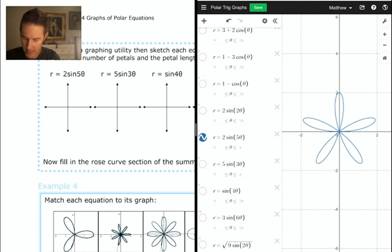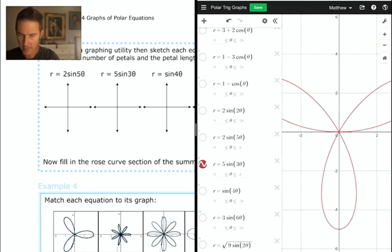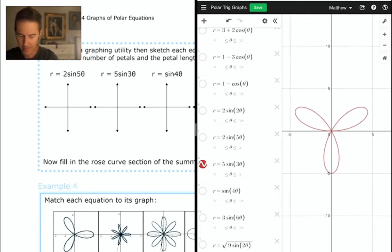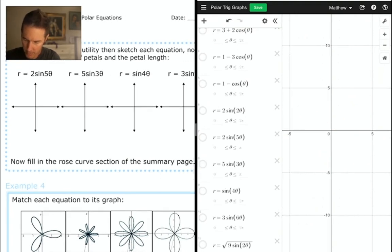And then I want to look at the next graph, which is 5 sine 3 theta. I have to zoom out on this one because petal length is 5, but there are only 3 petals. Odd number on theta means we'll have that many petals.